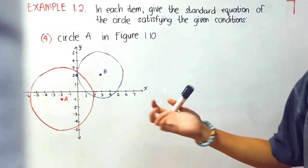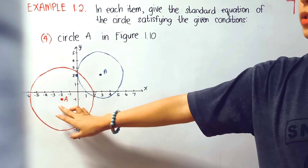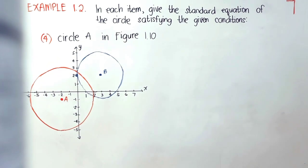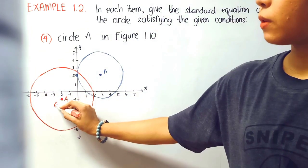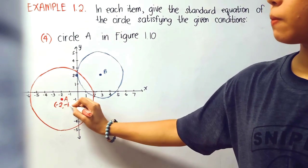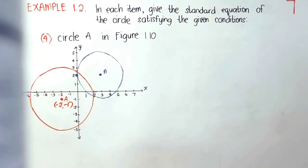Circle A in figure 10 is this portion, so we'll focus on that on number 4. Since the center is negative 2, negative 1, which is not in the origin,